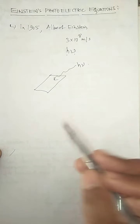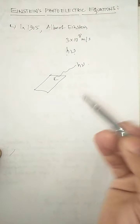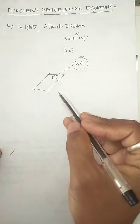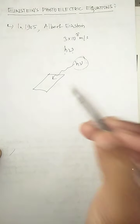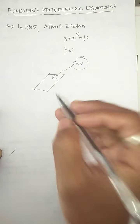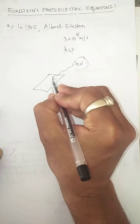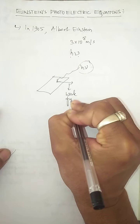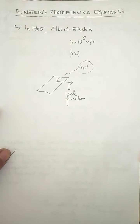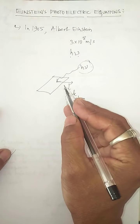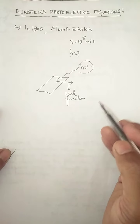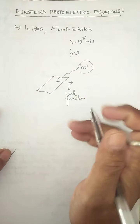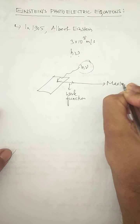Any one of the electrons absorbs this energy hν of the photon. As soon as the energy is absorbed by the electron present in the metal plate, that electron utilizes part of the energy in ejecting itself from the metal plate. For ejecting, the electron needs energy called the work function — the minimum energy required to eject the electron from the metal plate.